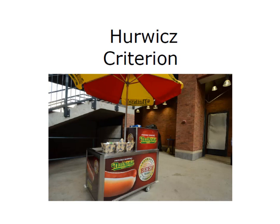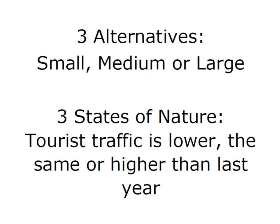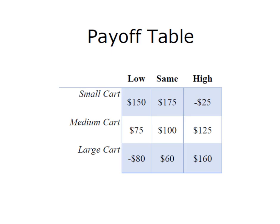I'm going to continue with my decision about opening a hot dog cart here on the Outer Banks. I've selected three alternatives: I can have a small, medium, or large hot dog cart. And I've identified three potential states of nature — tourist traffic will either be lower, the same, or higher than last year. I've created my payoff table that shows my payoffs for each decision alternative under each potential state of nature.